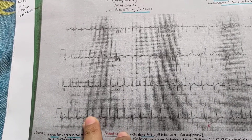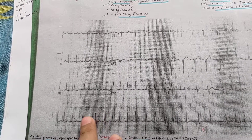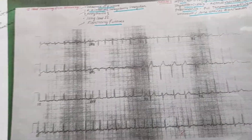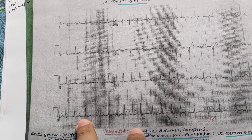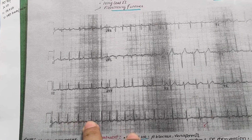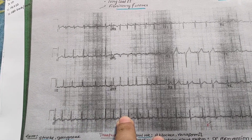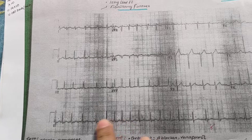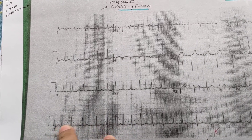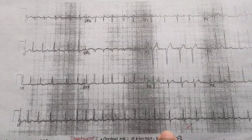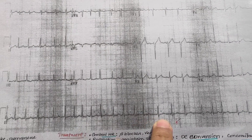R and RR is irregularly irregular. First of all, RR is irregularly irregular. There is no P wave — the absence of P wave. And what is F wave present? Fibrillatory wave present.